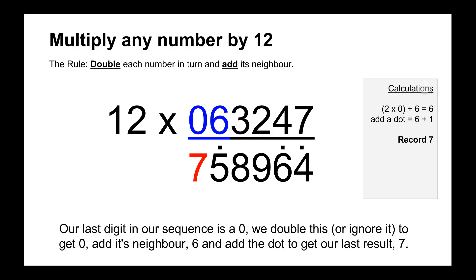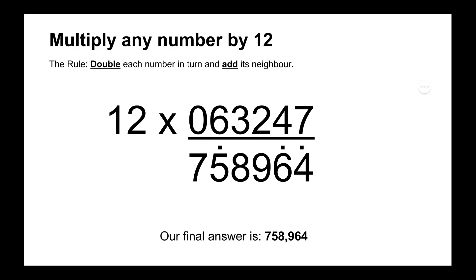And then the last digit is 0. So 0 times 2 or 0 doubled is 0 plus its neighbour is 6. And then we add the dot above the 5 which represents the carry 10 to get our answer 7. So 12 times 63,247 is 758,964. And that's our answer guys.